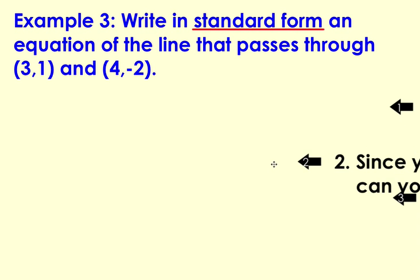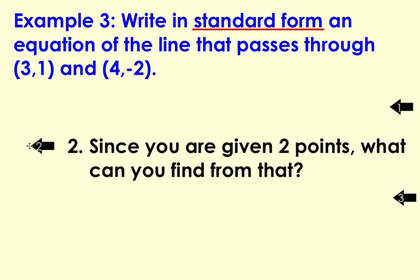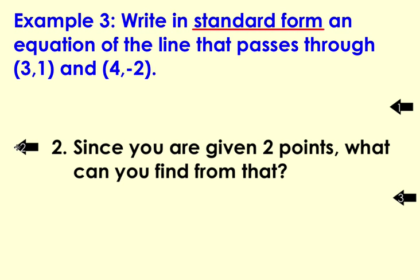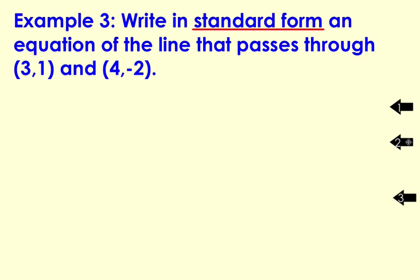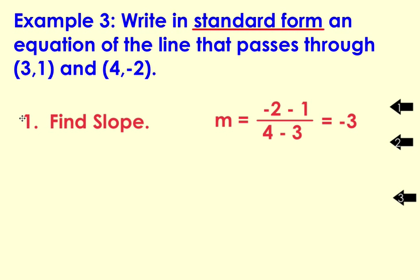So the following question would be, since you were given two ordered pairs or two points, what can you find from that information? I hope you were thinking that from two ordered pairs, you can always find the slope. When done correctly, your slope is negative three.